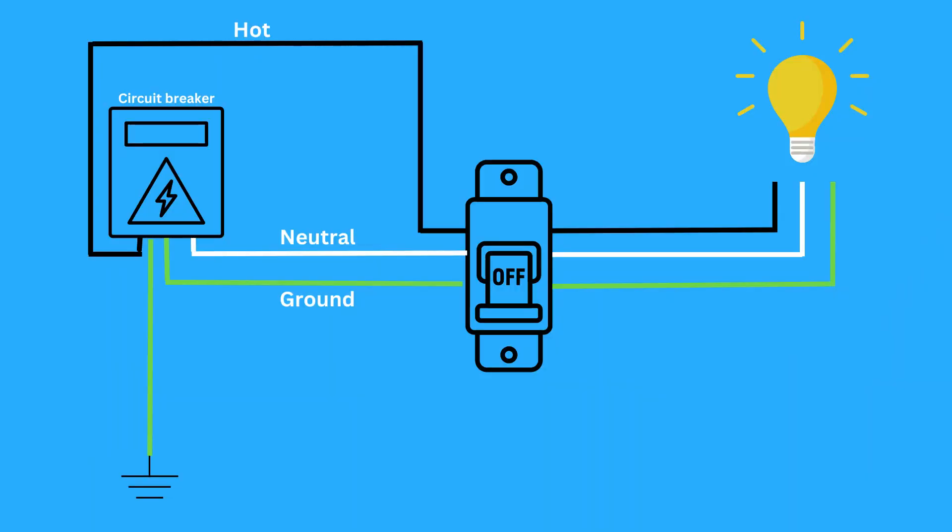First, let's quickly recap the roles of hot and neutral wires. In this diagram, hot is the black wire, neutral is the white wire, and ground is the green wire. Hot wires carry electrical current from the power source to your appliances, while neutral wires return the current back to the power source.